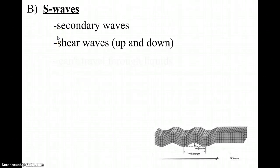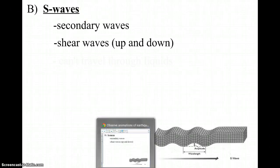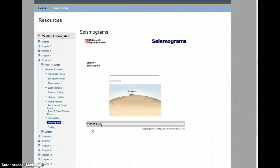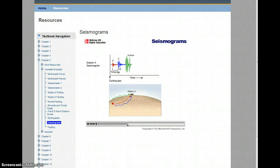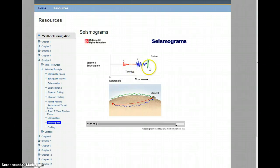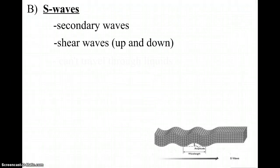So again, P waves are primary and S waves are secondary. Going back to the first animation, when the earthquake happens, watch the red arrow — that gets there first, those are the P waves. Then the S waves arrive afterwards. The same thing happens on the seismogram: P waves get there first, there's our P wave spike, then the S waves arrive, and finally the surface waves arrive.